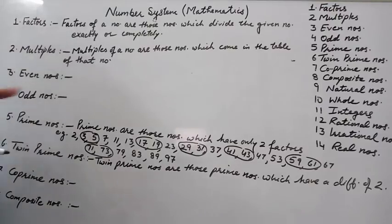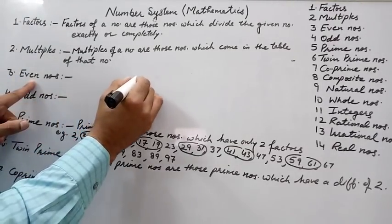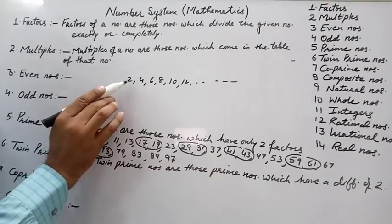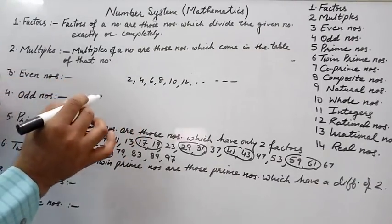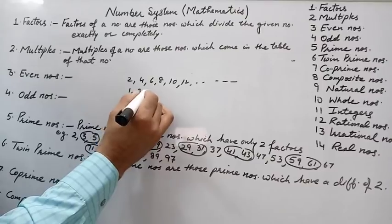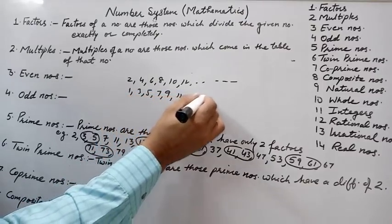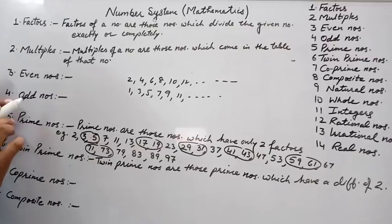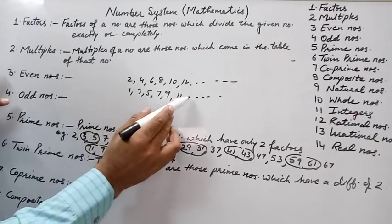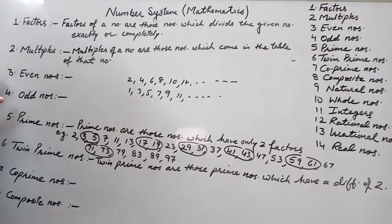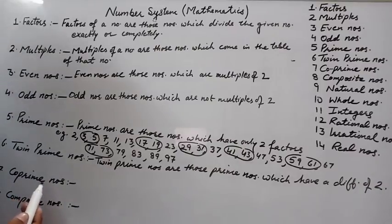Even numbers are numbers that are multiples of 2, such as 2, 4, 6, 8, 10, 12, and so on. Numbers which are not multiples of 2 are called odd numbers, such as 1, 3, 5, 7, 9, 11, and so on.